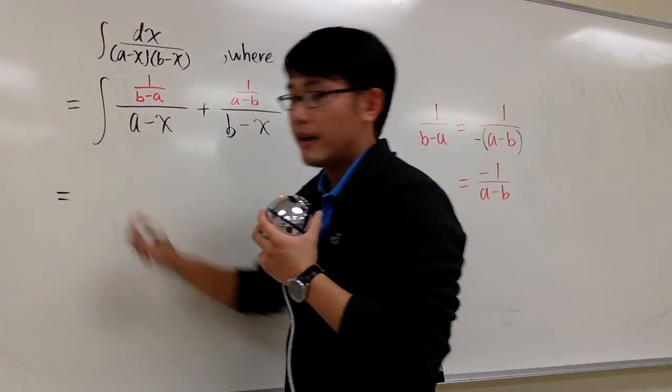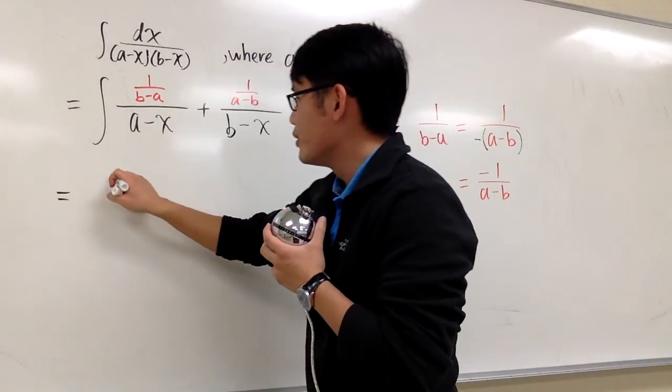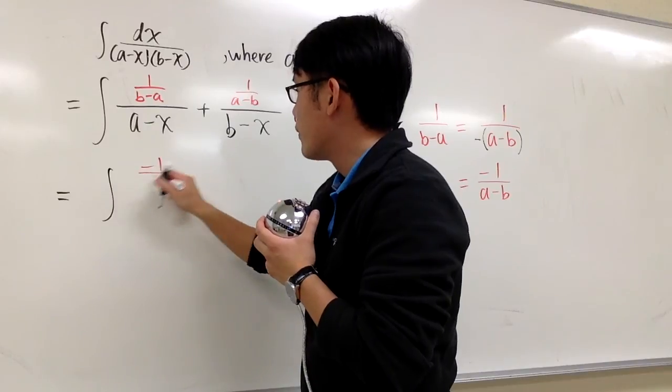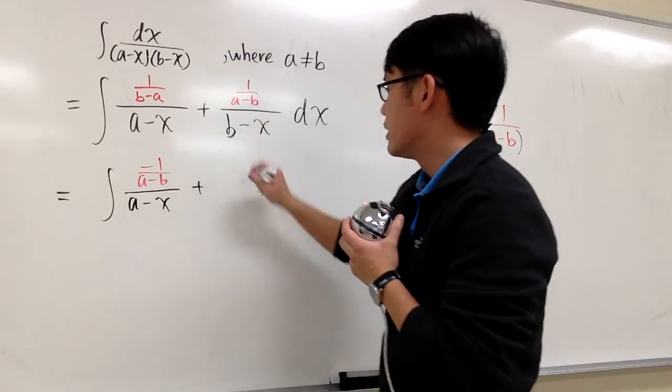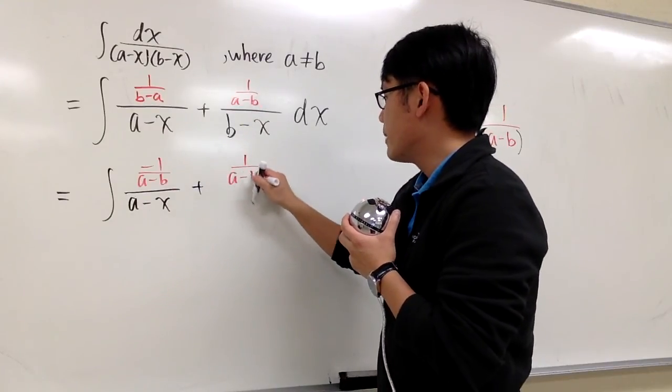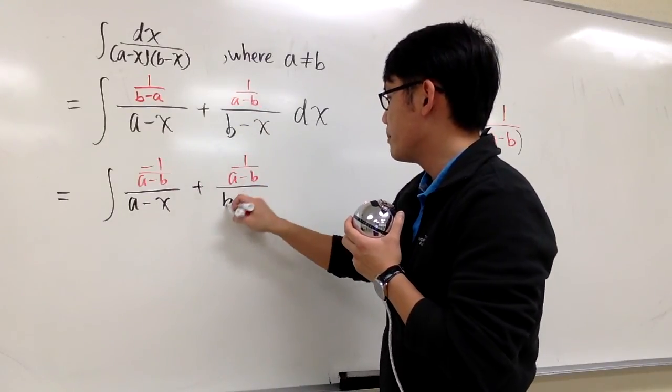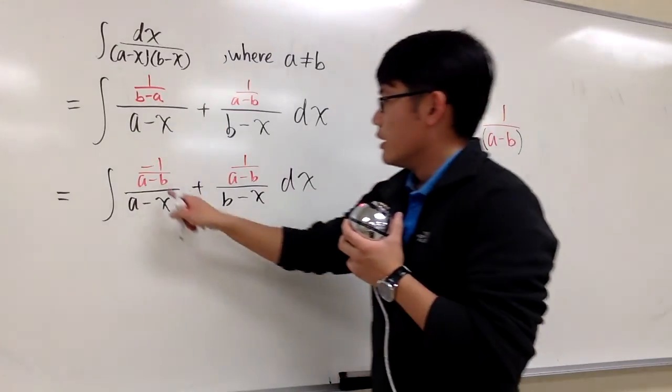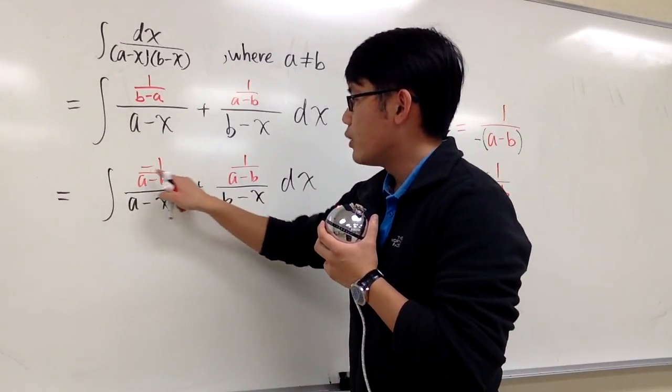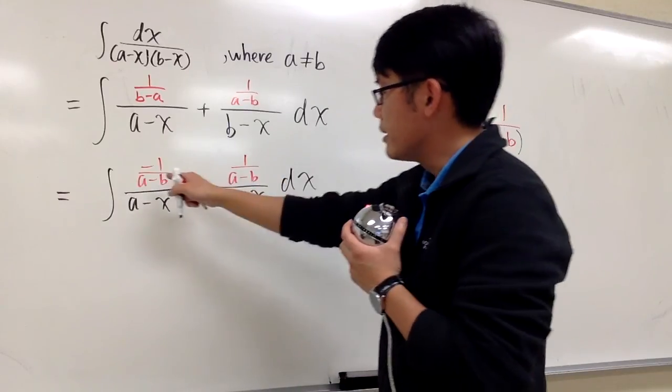I'm going to look at this as negative 1 over (a-b). And this way we can factor something out. This is going to be negative 1 over (a-b) over (a-x) plus